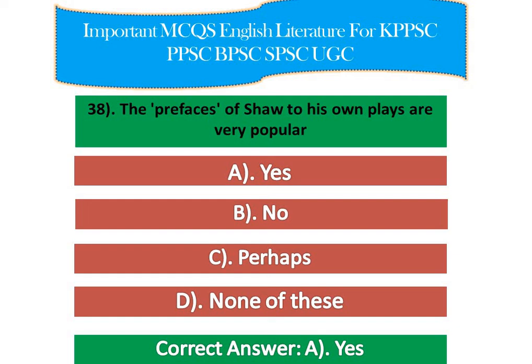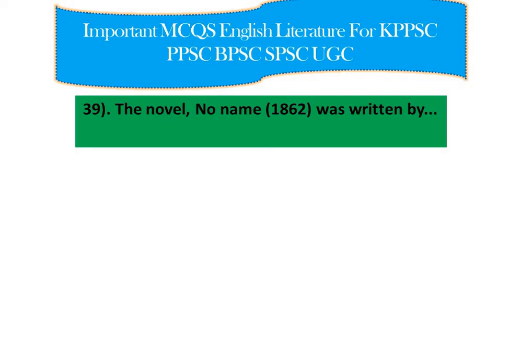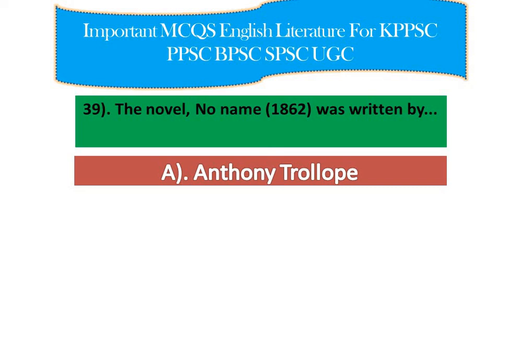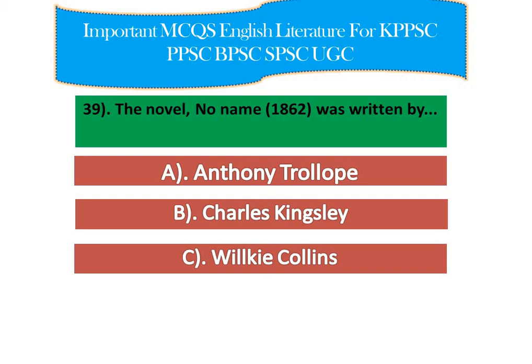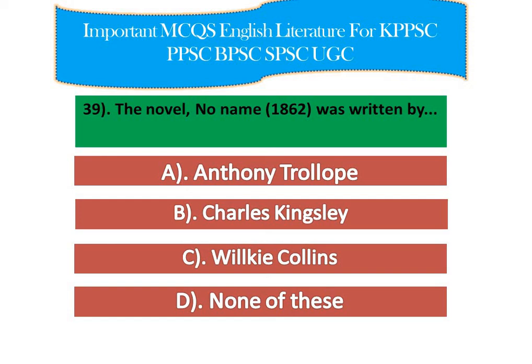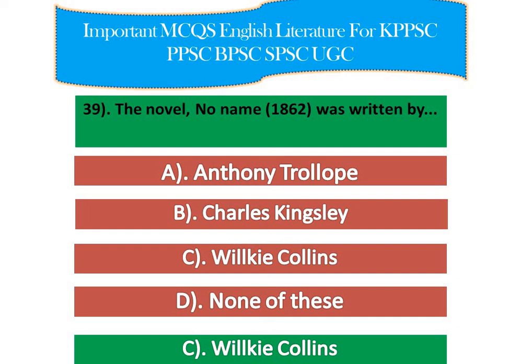Question number 14: The novel 'No Name' (1862) was written by — option A: Anthony Trollope, option B: Charles Kingsley, option C: Wilkie Collins, option D: none of these. The right answer is option C — Wilkie Collins. 'No Name' was published in 1862 and deals with the theme of illegitimacy. It was originally serialized in Charles Dickens's magazine 'All the Year Round' before the book was published in 1862.